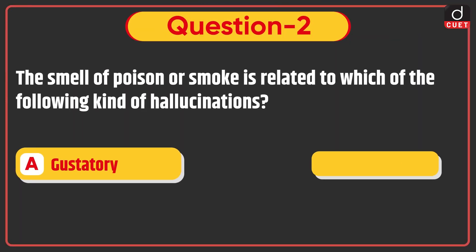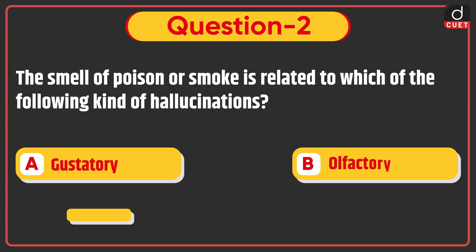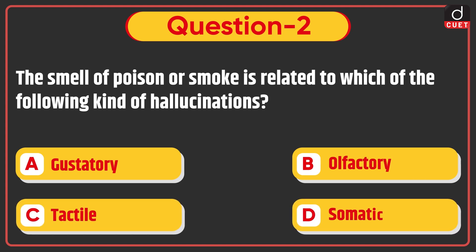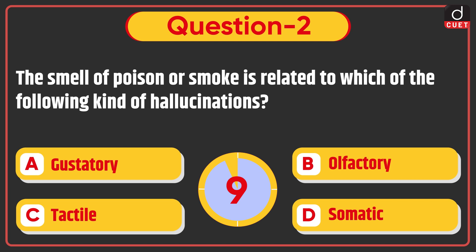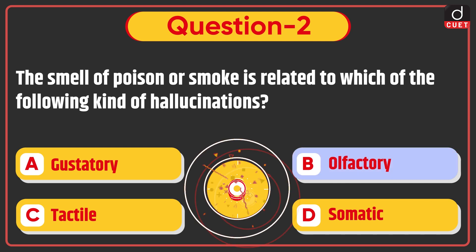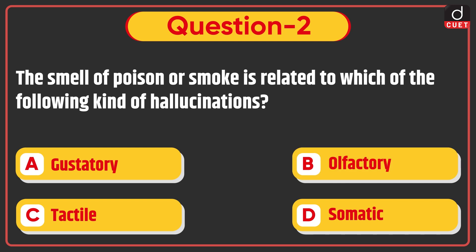Next question is: The smell of poison or smoke is related to which of the following kinds of hallucinations? Gustatory, Olfactory, Tactile, or Somatic? The correct answer is option B, Olfactory.